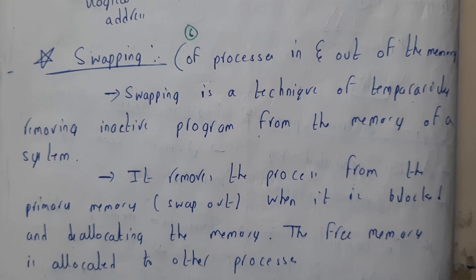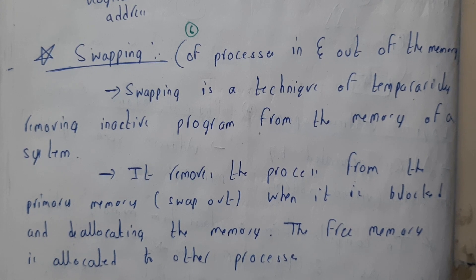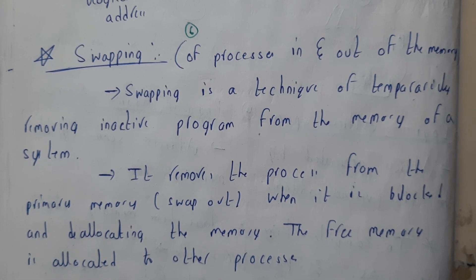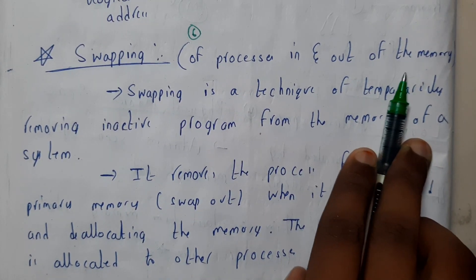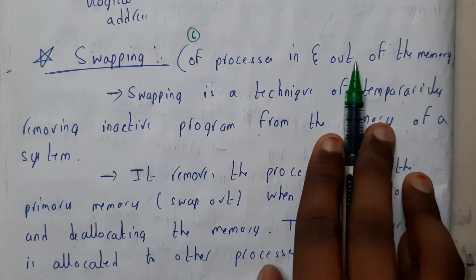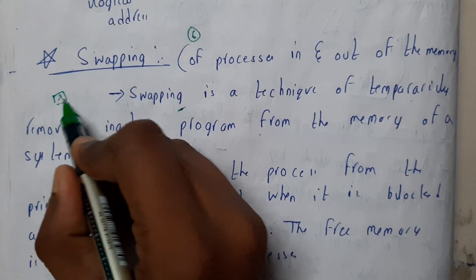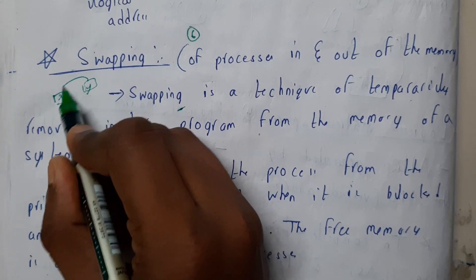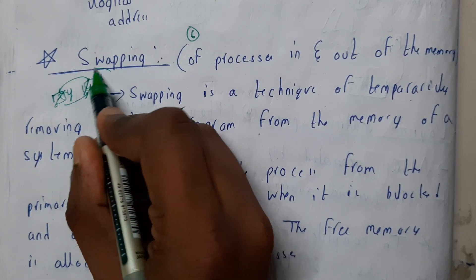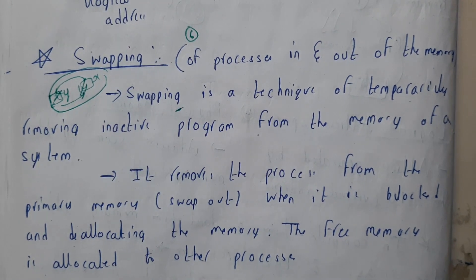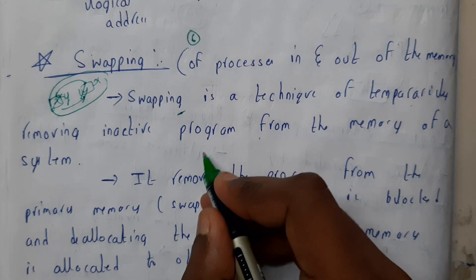Hello guys, we are back with our next tutorial. In this tutorial, let us learn what is swapping of processes — basically swapping processes in and out of memory. So what is swapping? If there is X here and Y here, exchanging their positions gives Y and X. This is nothing but swapping, and the same concept is applied in main memory.